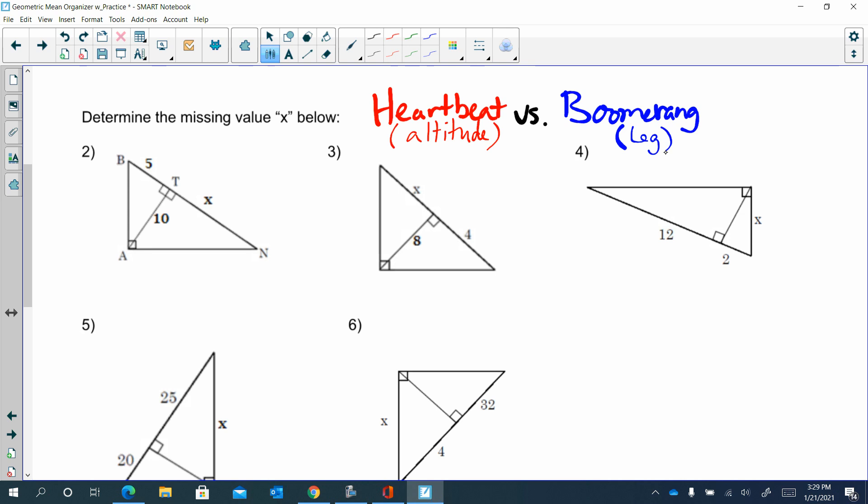So on this first one, this one would be heartbeat because we have the altitude. Another way to think of it, if you don't draw the heartbeat, heartbeat is when we're doing part to the altitude, altitude to the part. So two is heartbeat. Three is heartbeat. When you set up your proportion for this one, we should have five is to 10 as 10 is to X. And then you just cross multiply to solve it. And I know you know how to do that. You have already shown that mastery on that. So two and three are heartbeat.